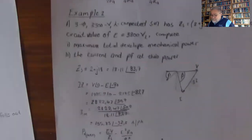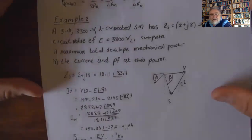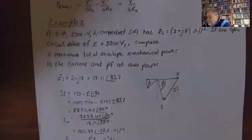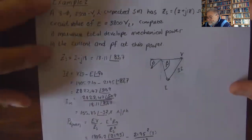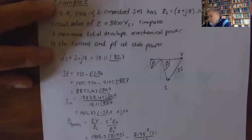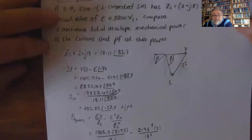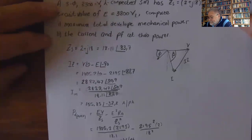Example 2: A 3-phase 3300V star-connected synchronous motor has Z_s equal to 2 plus j18 ohms per phase. If the open circuit value of E is 3800 volts line, compute the maximum total developed mechanical power and the current and power factor at this power. Z_s is 18.11 at angle 83.7 degrees. I X_s equals V minus E angle minus 90 degrees, giving 2822.47 at angle 50.8 degrees. Therefore the current is 145.85 at angle minus 32.8 amps per phase.